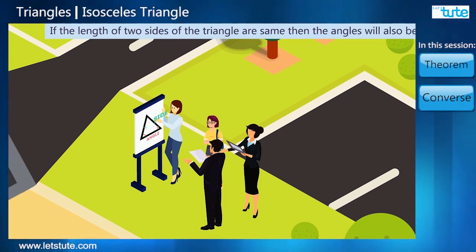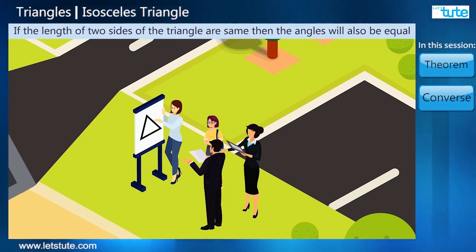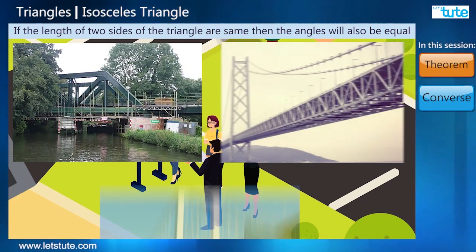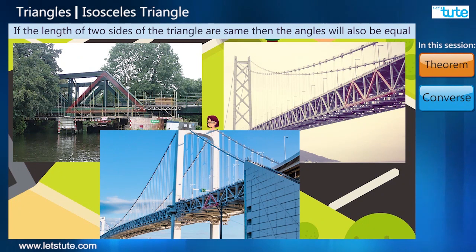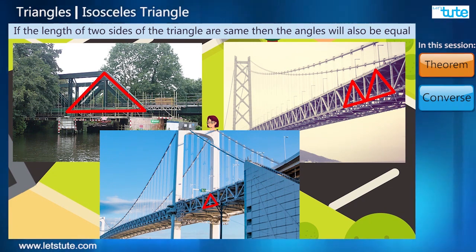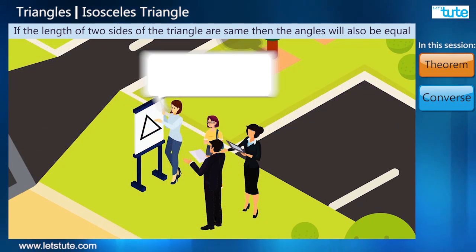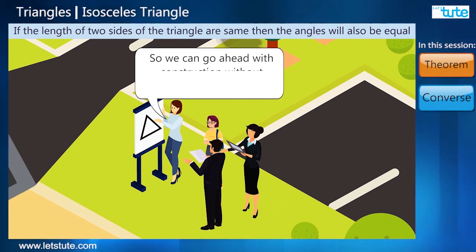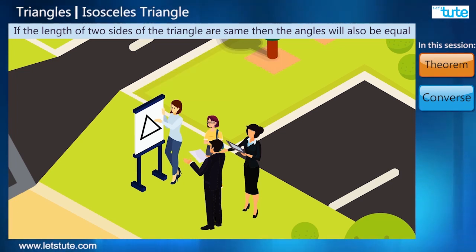They were saying things like if the length of two sides of the triangle are same then the angles will also be equal. Equilateral and isosceles triangles are often used in constructions of bridges because they help in distributing the weight and forces to spread across the bridge evenly.